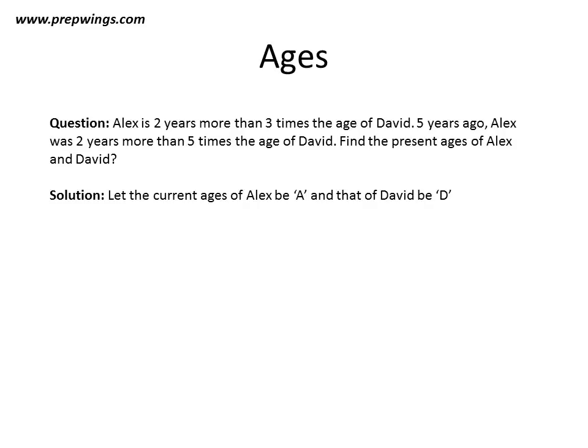We will assume the current ages of Alex to be A and that of David to be D. Now A is equal to 3D plus 2, because Alex is 2 years more than 3 times the age of David. So this is our equation 1.